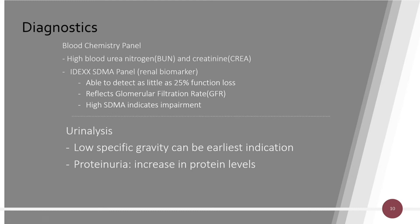High SDMA levels indicate that the glomerular filtration rate is abnormal or impaired. Another diagnostic is a urinalysis, where you look at the specific gravity and also proteinuria — the protein levels in urine. Specific gravity can be one of the earliest indications that there might be a problem with the kidneys.